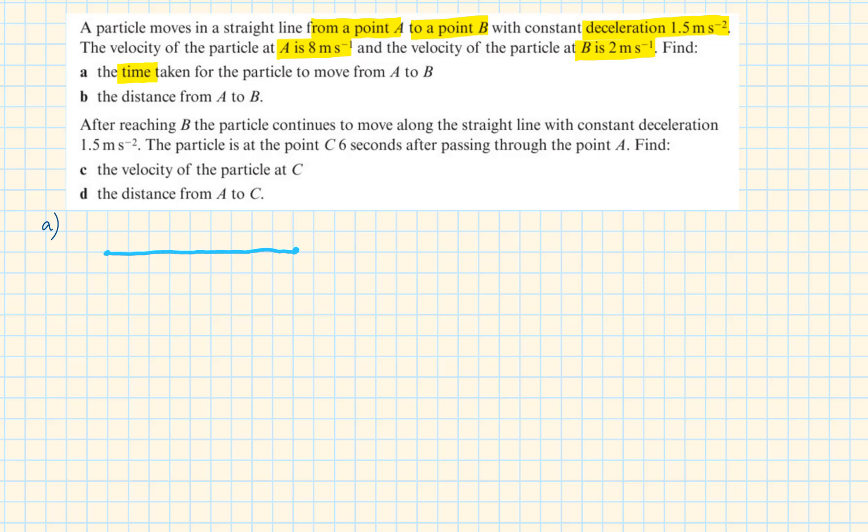Drawing a line from A to B, noting the positive direction, the U, the V, the acceleration and we don't know T. We can work out T by using the formula V equals U plus AT. Replacing the values will give us T equals 4 seconds.